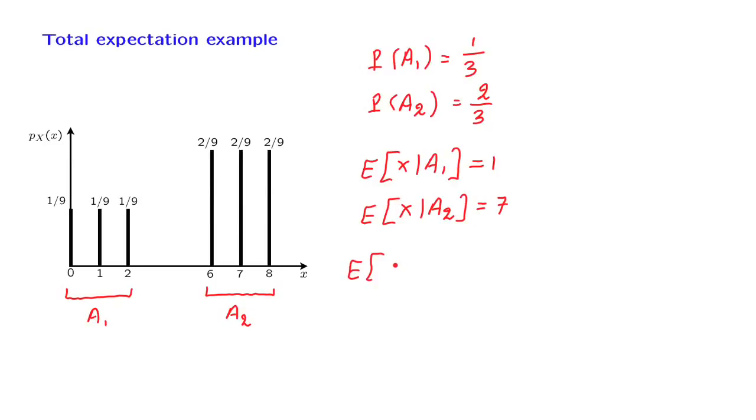And now we can apply the total expectation theorem and write that the expected value of x is equal to the probability of the first scenario times the expected value under the first scenario plus the probability of the second scenario times the expected value under the second scenario. In this case, by breaking down the problem in these two sub-cases, the calculations that were required were somewhat simpler than if you were to proceed directly.